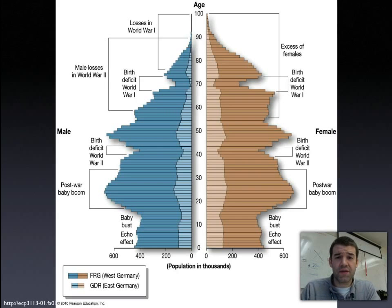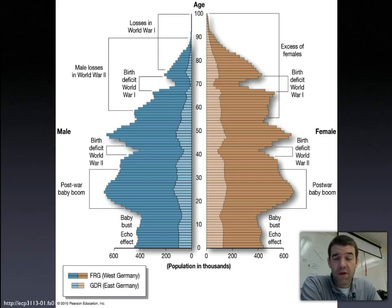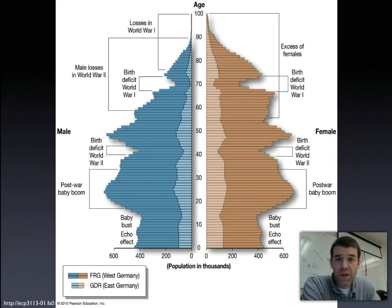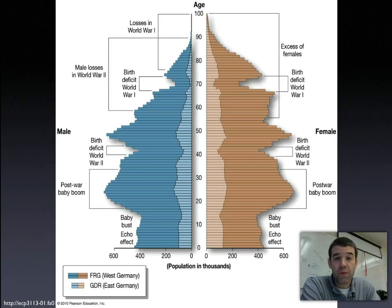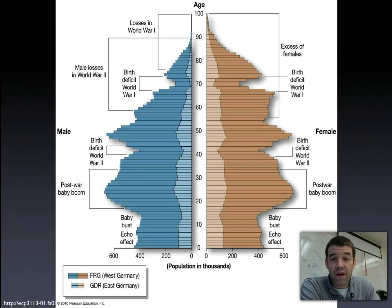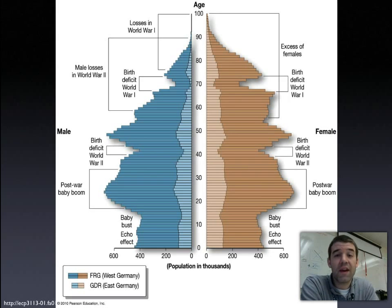Looking at Germany in a historical sense, you can see the impact of world events on a population pyramid. Around age 70, where it narrows, you can see the birth deficit as a result of World War I, and the male population is significantly lower because of casualties from that war. You can also look at the birth deficit and baby boom generation from World War II as you move to the younger part of the pyramid, and then the narrowing base reflecting fewer births and smaller families in the modern era.